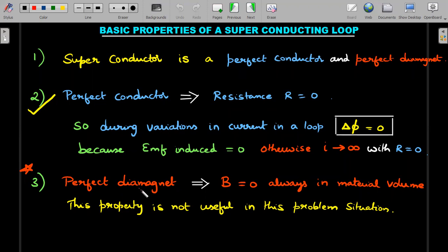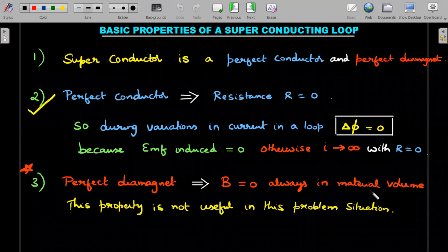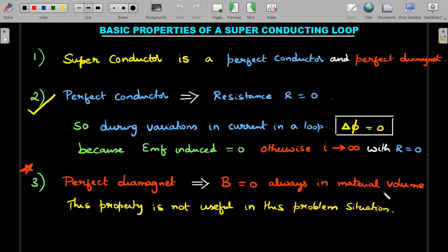An extra point for superconductor, which we may not use in this problem but will be useful for other magnetism problems, is that it is a perfect diamagnet. Any perfect diamagnet will always have B equal to zero in the material volume. If this conducting loop itself has a cross-sectional area, in that volume the magnetic field will become zero—it will expel all the magnetic field lines. Please understand the flux here that we are calculating is within the loop, the empty space inside the loop, whereas this B that I am talking about is in the material volume. This property right now is not used in this problem situation; it's the second one that I ticked here which would be used in most of our JEE Advanced problems of superconductors.